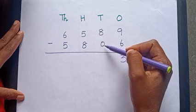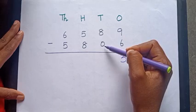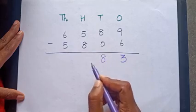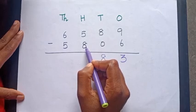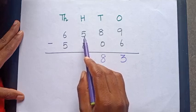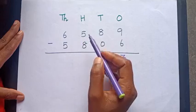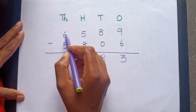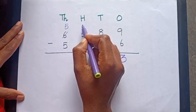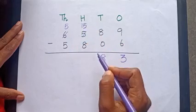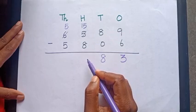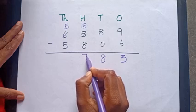8 minus 0 is equal to? Yes, very good, 8. 5 minus 8 is equal to? We know 5 minus 8 is not possible, so let's borrow. 6 becomes 5, and 5 becomes 15. Now 15 minus 8 is equal to? Tell me the answer. Yes, 7.